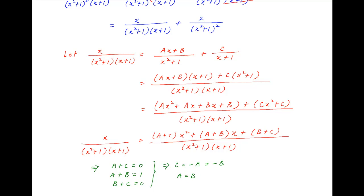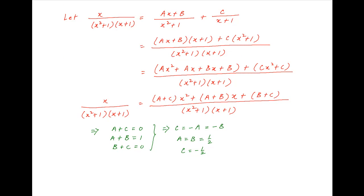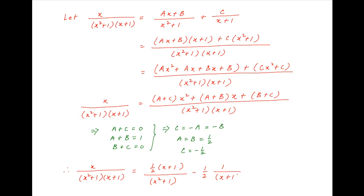Therefore a equals b, and the second equation implies both a and b equal one-half. So c equals minus one-half. Therefore x over [(x squared plus 1)(x plus 1)] equals one-half times (x plus 1) over (x squared plus 1) minus one-half times 1 over (x plus 1).